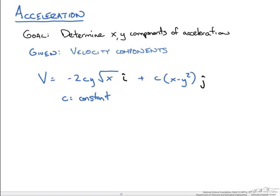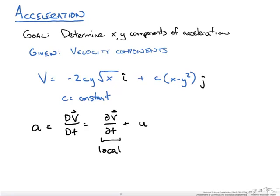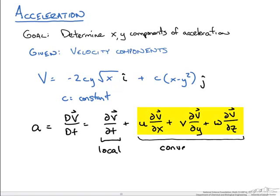Our goal is to determine the x and y components of acceleration for this field. Recall that acceleration is the material derivative of the velocity, which can be rewritten as: the change in velocity with time — the local acceleration — plus u times the differential of velocity with respect to x, plus v times the differential with respect to y, plus w times the differential with respect to z. The spatial part is known as the convective acceleration.